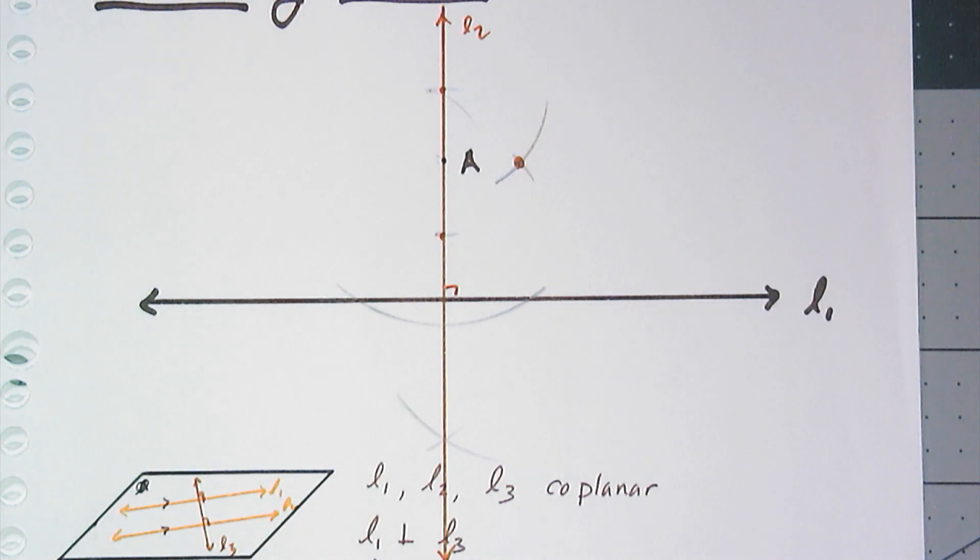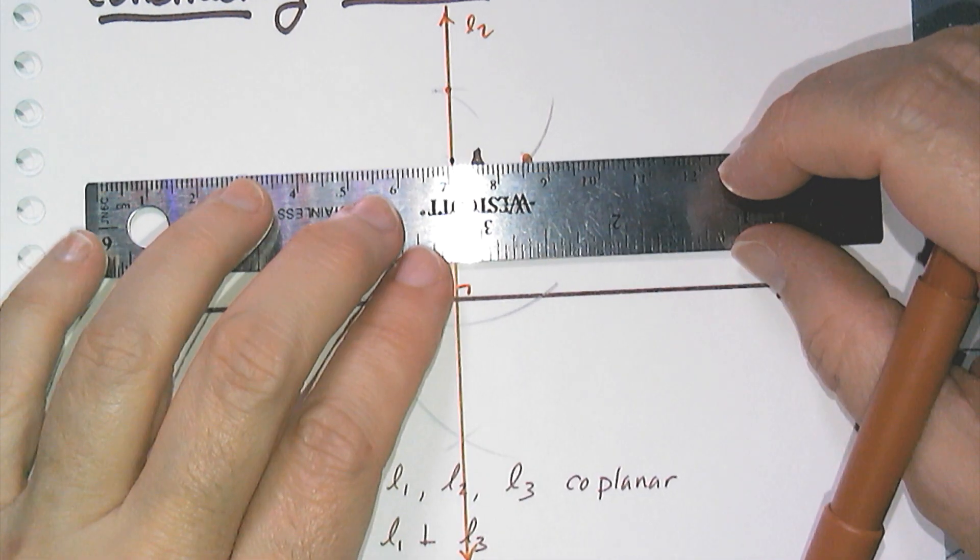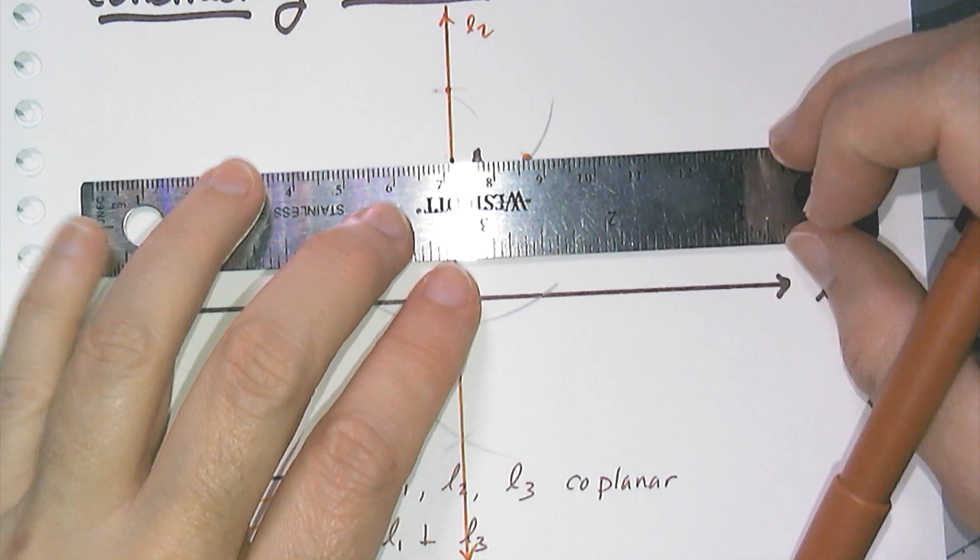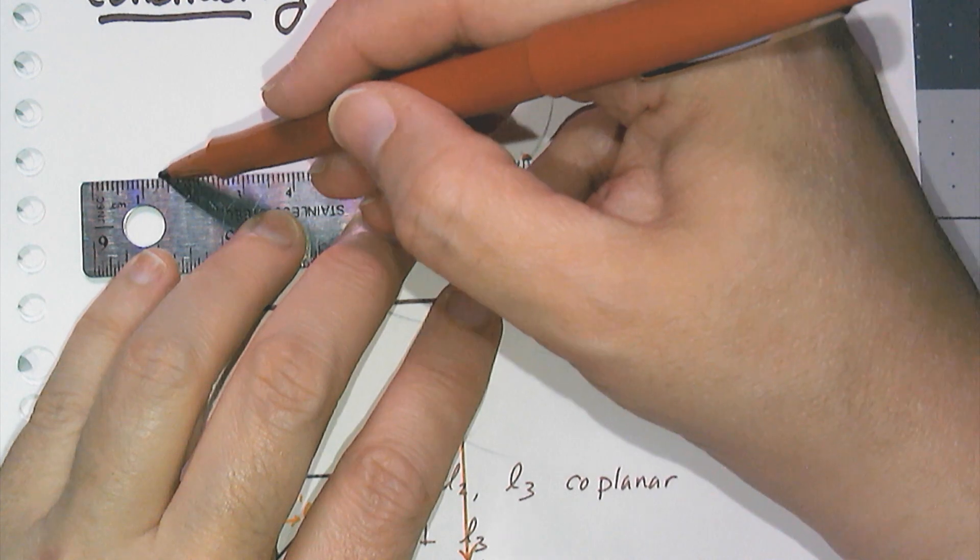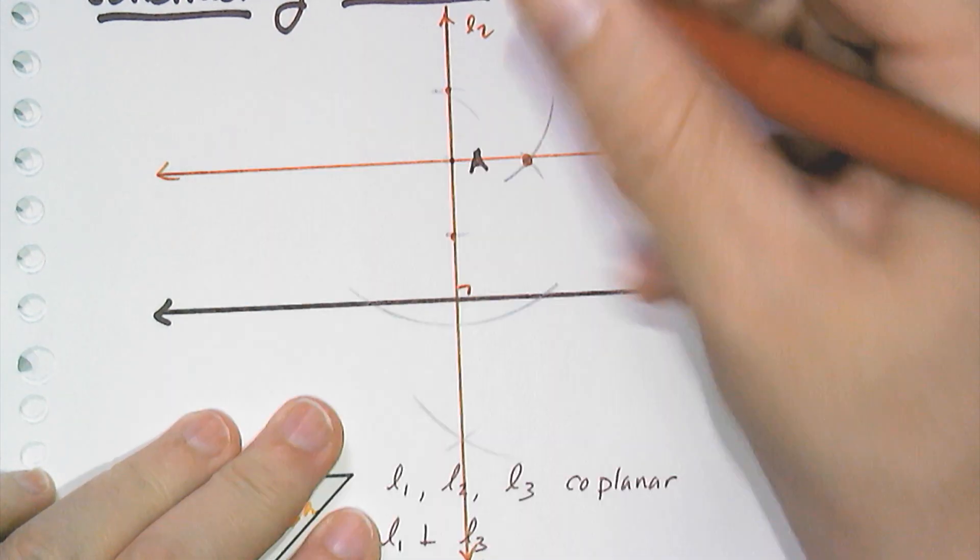And I know that this new point here is equidistant from those two points that I constructed, which means it has to be on the perpendicular bisector, of which A is also on the perpendicular bisector. And so now I just have to connect these two points, and then I get another perpendicular.